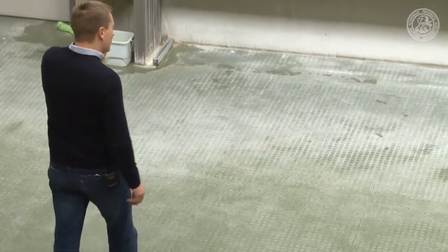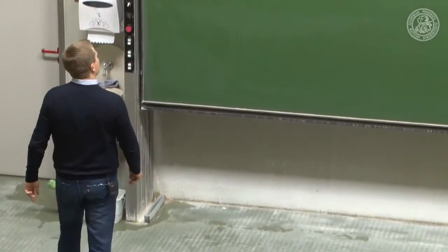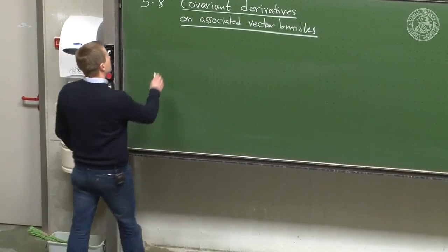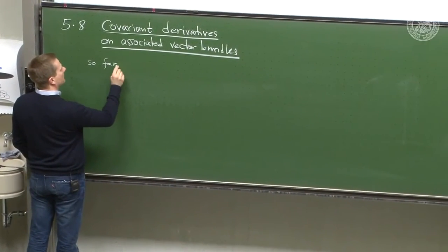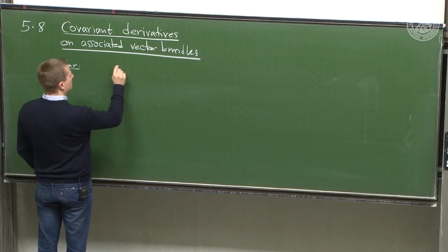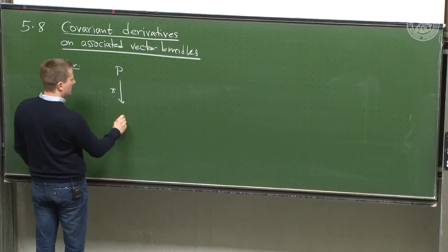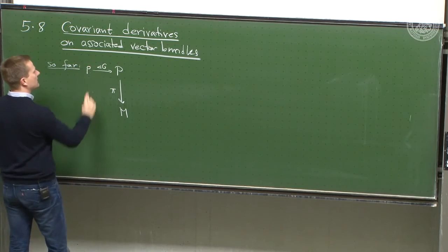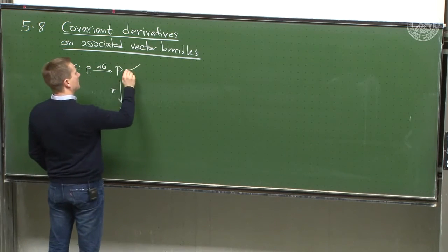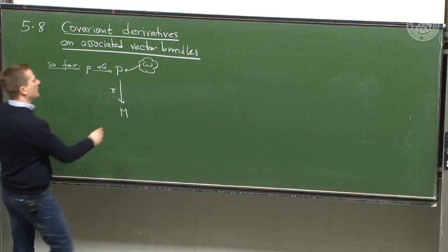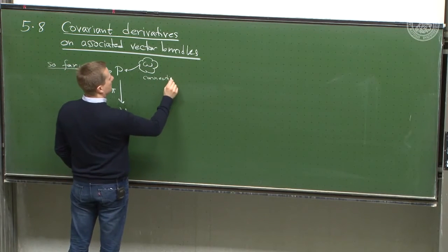Good morning and welcome back. Today we'll be concerned with some technical aspects of covariant derivatives on associated vector bundles. So far we discussed this topic sketchily: we started with some principal bundle P with some fiber G, such that there's a right action of G on it. On this principal bundle total space we assume there is given a connection one-form omega, because without a connection one-form there are no covariant derivatives.